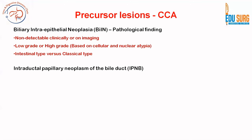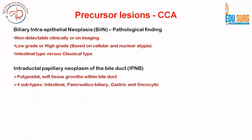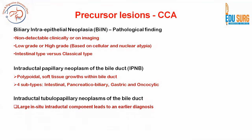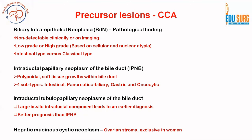Another entity — on which a case report has been published — is intraductal papillary neoplasm of the bile duct (IPNB). This can be seen as a polypoidal growth within the bile duct and has four subtypes: intestinal, oncocytic, gastric, and pancreatobiliary. The next precursor lesion is intraductal tubulopapillary neoplasm of the bile duct (ITPN), which has a large in-situ intraductal component leading to earlier diagnosis; ITPN has a better prognosis than IPNB. The last precursor lesion is hepatic mucinous cystic neoplasm — ovarian stroma on pathology is diagnostic and it is almost exclusively seen in women.